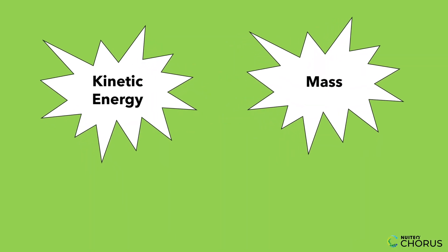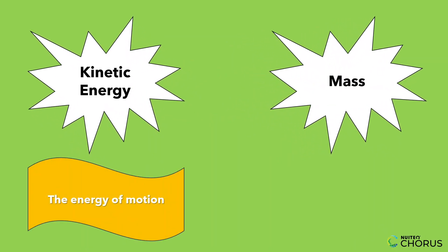Let's define some key terms. Kinetic energy is the energy of motion—anything moving has it. Mass is how much stuff an object is made of. Together, they create a linear relationship: as mass increases, so does kinetic energy.